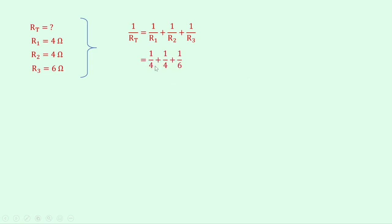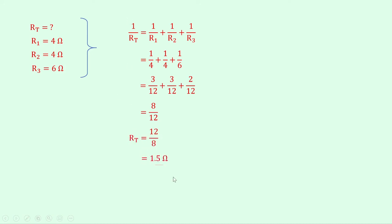Substituting in the numbers gives 1/4 + 1/4 + 1/6. I'm going to use the lowest common denominator method — you can choose whichever method you prefer. The lowest common denominator of 4 and 6 is 12. Multiplying 1/4 by 3/3 gives 3/12 for each of the first two fractions, and multiplying 1/6 by 2/2 gives 2/12. So this becomes 3/12 + 3/12 + 2/12 = 8/12. Flipping both sides gives RT = 12/8 = 1.5 ohms.